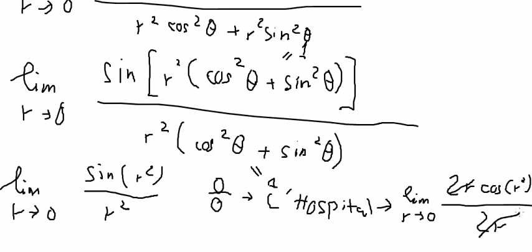The two R in the numerator and denominator cancel, and we get cosine of R squared. Putting zero in gives us cosine of zero, which equals one. This is the final answer. That is the end — thank you for watching.